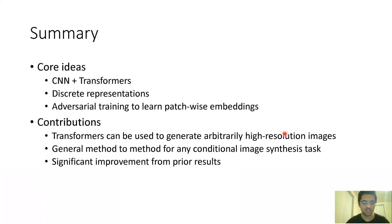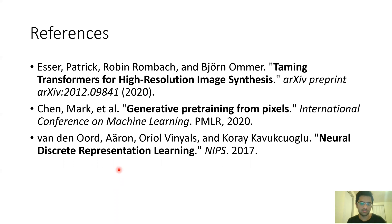That's all I have. In summary, they have this nice idea of using CNNs plus transformers and they use discrete representations, which significantly increases performance, and adversarial training to learn patchwise embeddings. Their main contributions are basically they show that transformers can be used to generate arbitrarily high-resolution images using that patchwise generation idea we talked about. They present a general method for any conditional image synthesis and show significant improvement from prior results. These are the references.